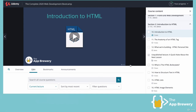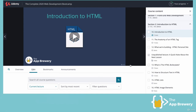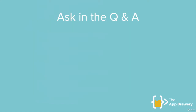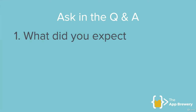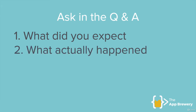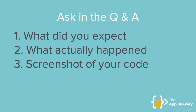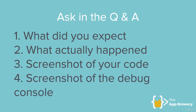If you have a question about anything in the tutorial, it's a good idea to include the timestamp at which it occurs in the video so I can quickly watch it and figure out what you're referring to in order to better answer your questions. When asking questions in the Q&A, the way to get the most helpful responses is by following a four-step approach: firstly, tell us what you expected to happen; then what actually happened; then include a screenshot of all your code corresponding to the situation; and then include a screenshot of the debug console that includes any errors if there were any.